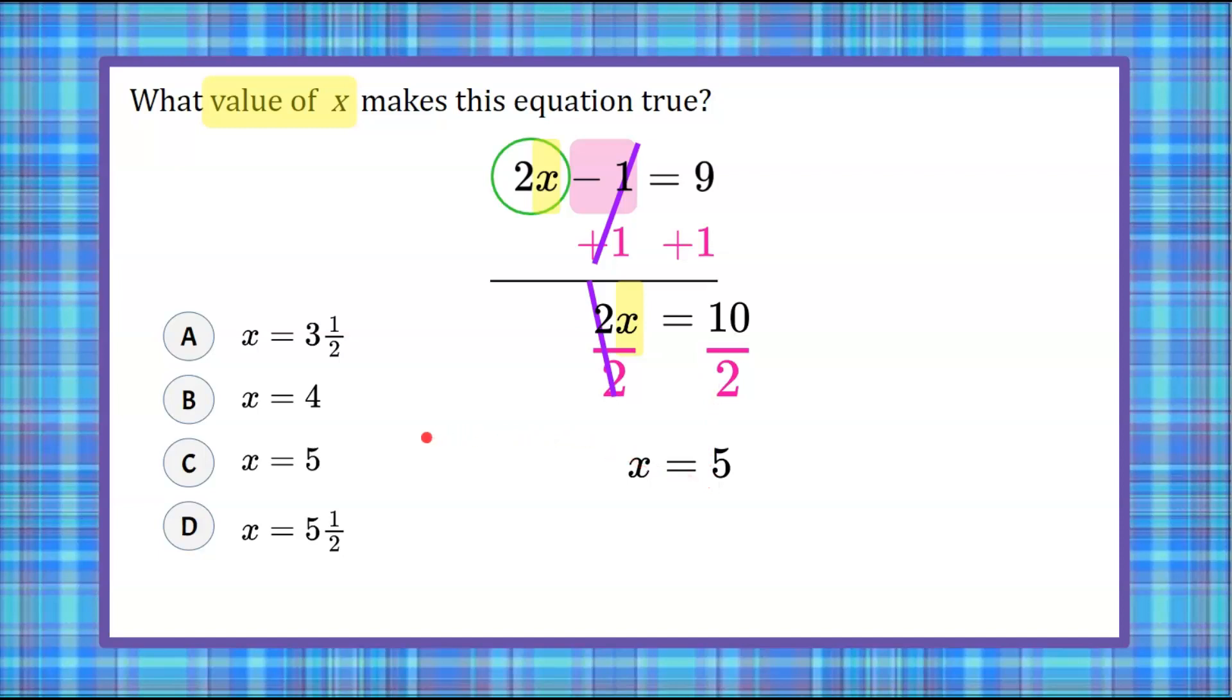So our answer choice here is 5. However before I make my answer choice I want to check my solution to make sure I didn't make an error. So I'm going to go back up to my original equation and I'm going to replace the x with my solution. So we're going to replace x with 5.